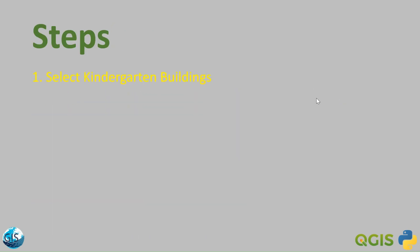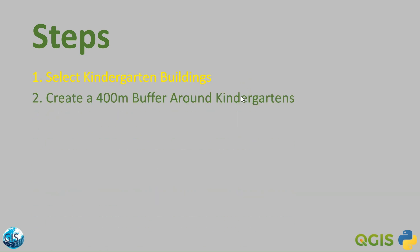Here is what I expect from you. First, select kindergarten buildings: create a function named select_kindergartens that takes a QGIS layer as input and returns a new layer containing only kindergarten buildings based on the building column. We have already talked about this. Second, create a 400-meter buffer around kindergartens: create a function called create_buffer that takes a QGIS layer, a buffer distance, and selected features as input and returns the buffer geometry.